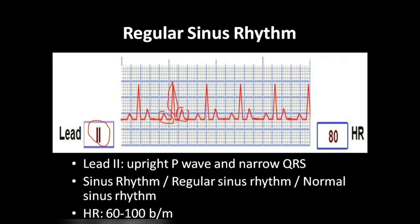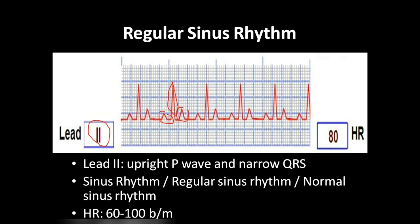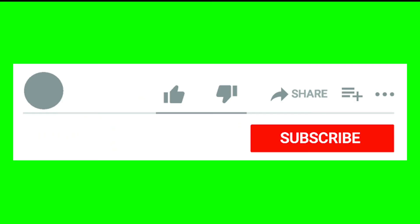The heart rate is usually between 60 to 100 beats per minute, because the heartbeats are generated by the sinoatrial node. So this is how we can read a regular sinus rhythm.